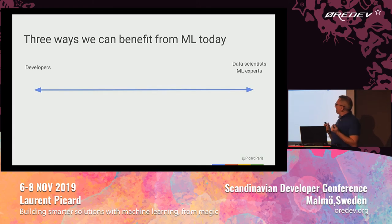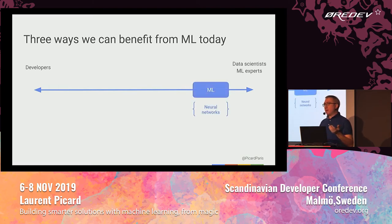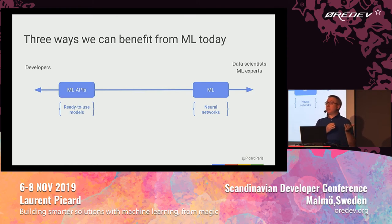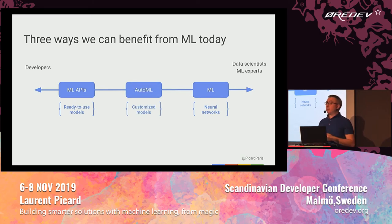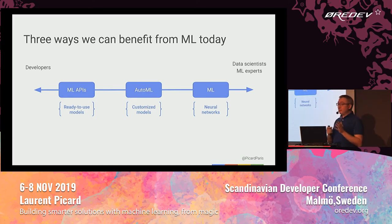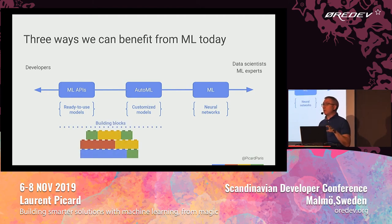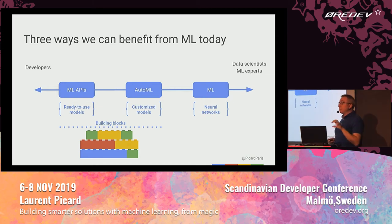As developers, there are three ways we can benefit from machine learning. Of course, the legacy way where you do hardcore machine learning. But if you're a developer with no expertise, you can use existing machine learning models — that will be the first part. And if that's not enough, there are AutoML techniques that fill a big gap, where you'll be able to build your own models, still without any expertise. These two parts are what I call the building blocks — like Lego bricks — and you can make smarter solutions thanks to that.